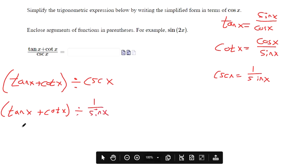So to divide a fraction, I have to flip and multiply the second fraction. So this is tangent x plus cotangent x times sine of x.